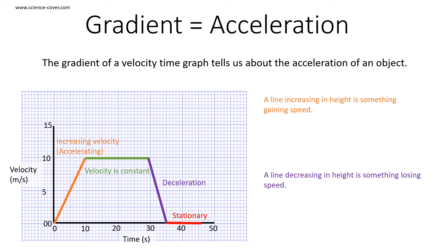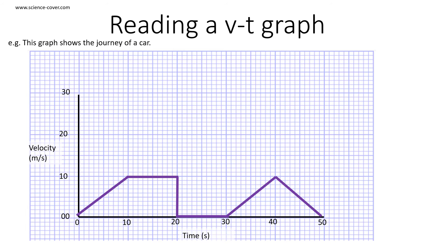The gradient of the velocity time graph tells us about the acceleration of the object. A line increasing in height is something gaining speed, whereas a line decreasing in height is something losing speed. This graph shows the journey of a car. Between zero and 10 seconds, we can see that the car's velocity has increased, so between these two points the car is accelerating.